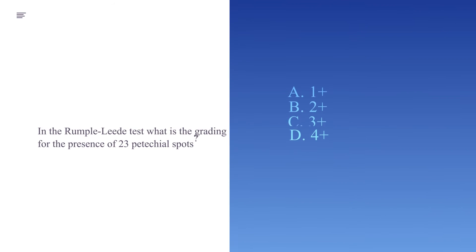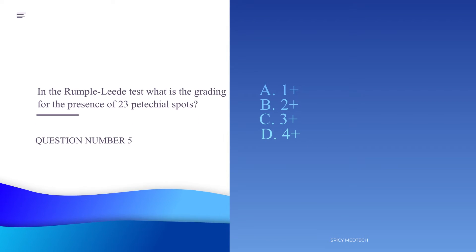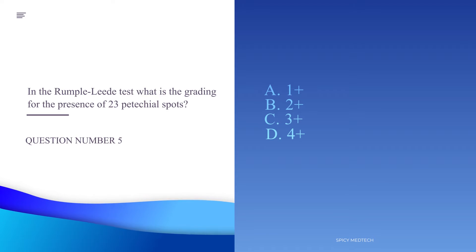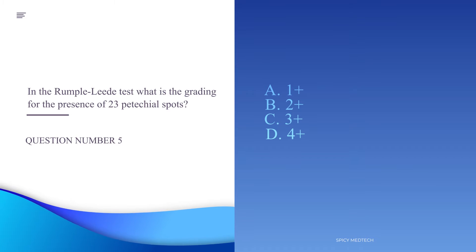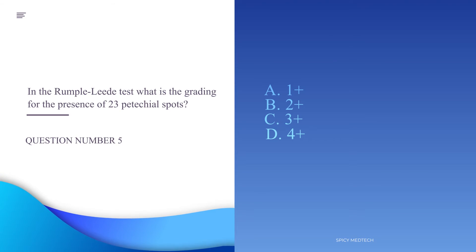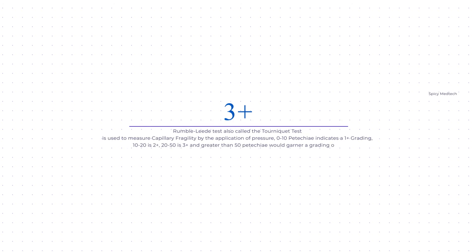Number five: In the Rumpel-Leede test, what is the grading for the presence of 23 petechiae? A. 1 plus, B. 2 plus, C. 3 plus, or D. 4 plus. The answer is letter C, 3 plus. The Rumpel-Leede test, also called the tourniquet test, is used to measure capillary fragility by application of pressure. 0 to 10 petechiae indicates 1 plus, 10 to 20 is 2 plus, 20 to 50 is 3 plus, and greater than 50 petechiae is 4 plus.